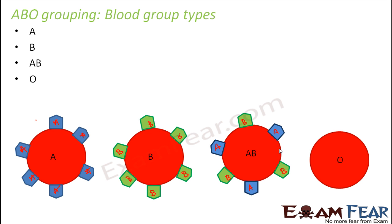These are the four types of blood groups based on ABO grouping. The concept of compatibility comes from the antibodies present in the plasma, in which the red blood cells are embedded. In order for one blood group to be compatible with another, the antigens and antibodies of the two blood groups must be compatible, because antibodies have the potential to destruct the RBCs by attacking their antigens. So we need to study the antigen-antibody interaction in detail.